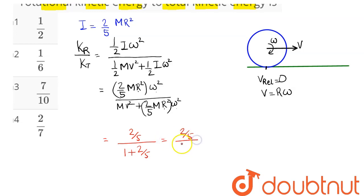So this simplifies as 2/7. Hence we can say here the required ratio is 2/7, so option number 4 is the correct answer. Hence we can say the ratio of rotational kinetic energy to total kinetic energy here is 2/7.